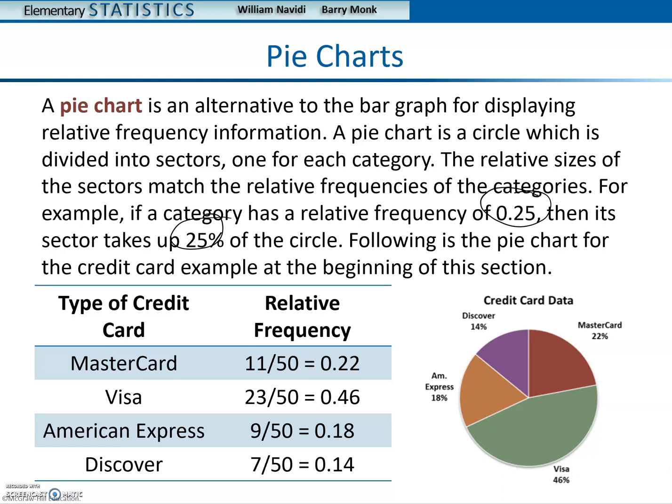Following is a pie chart for the credit card example at the beginning of the section. So the relative frequency is 0.22 for MasterCard, and here we have MasterCard at 22%. So it's a quick conversion of multiplying by 100 to go from relative frequency to pie chart representation. So if you were given a pie chart with these percentages, like Visa is 46%, and you were asked what is the relative frequency, you would be able to look at this pie chart and divide by 100. So you would say 46 divided by 100 would give you the 0.46. So you can go from relative frequency to the pie chart data, or from the pie chart data back to the relative frequency.